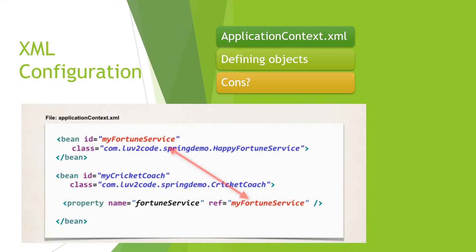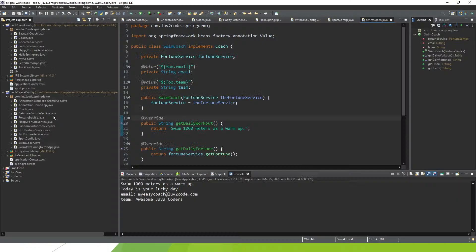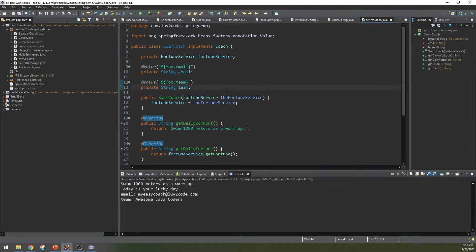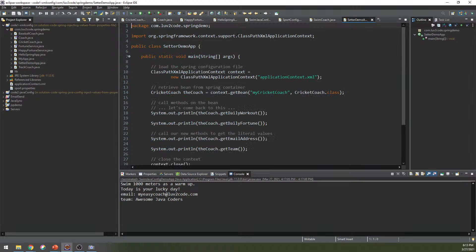What are the cons of this XML configuration? As you can see, this is error prone. You have to remember every — IntelliSense can help you, but everything is not that good. Let's see some code. Here we have some demo app that uses some coaches. We have the Setter Demo app. Just so you know, we have this applicationContext.xml file. Let's open it and see what's inside.